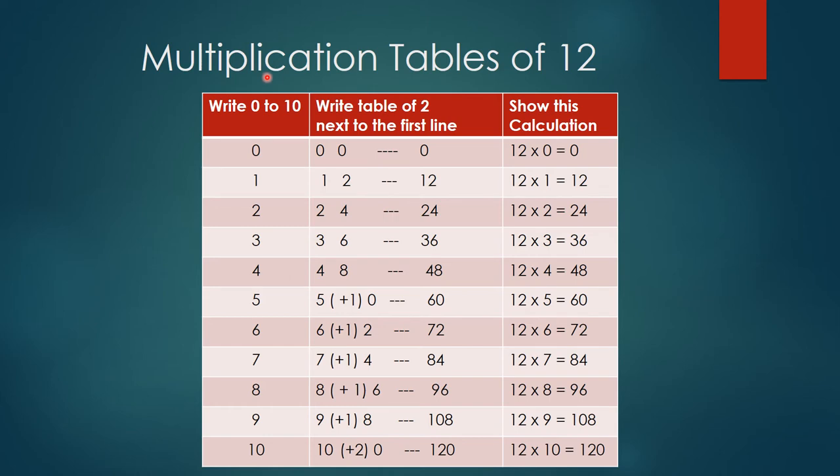Now let us see how to make them understand tables of 12. This is also pretty simple. But here I presume that kids already know the tables of 2, because 2 × 1 = 2, 2 × 2 = 4. That's the basic thing what the kids learn.